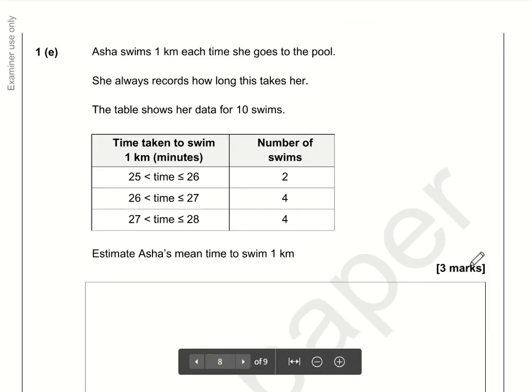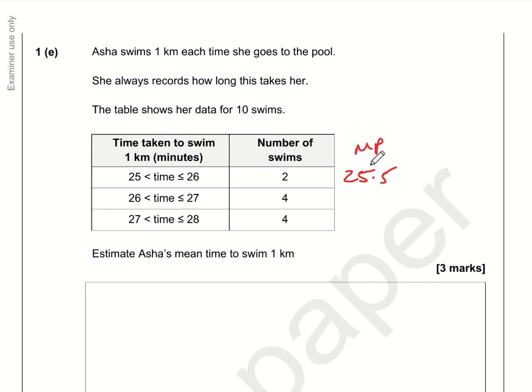Now for part C, we want to work out an estimated mean. The reason why it's an estimate is because we're dealing with grouped data. Asha has done two swims between 25 and 26 minutes—they might have been 25 minutes and a millisecond or 26 minutes exactly. We can only assume both were exactly 25.5, so we create a new column called the midpoint of these ranges: 26.5 and 27.5.